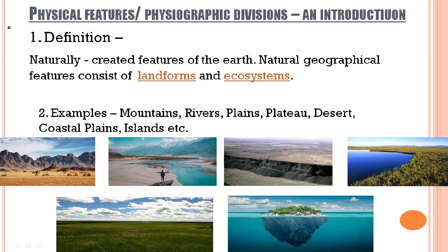First of all, we learn about the physical features. What do you actually understand by the term 'physical features'? Physical features are naturally created features of the earth, and natural geographical features consist of landforms and ecosystems. Before we get into the geographical aspect of physical features, let us take a very easy example for your understanding.